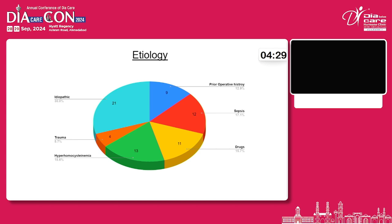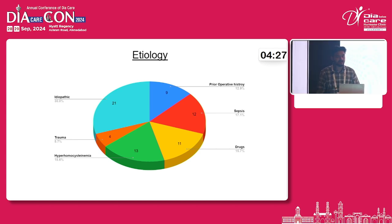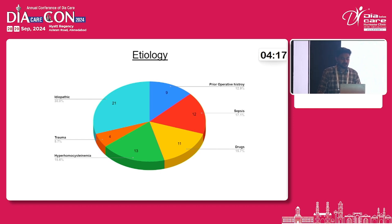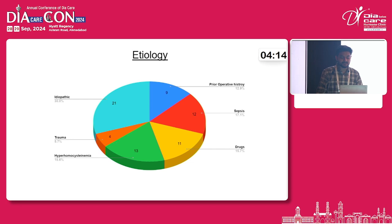The etiological or blood-related causes include genetic mutations such as deficiency of protein C, Factor V Leiden mutation or deficiency. Other causes include hyperhomocysteinemia, prior history of trauma, sepsis, and drugs.